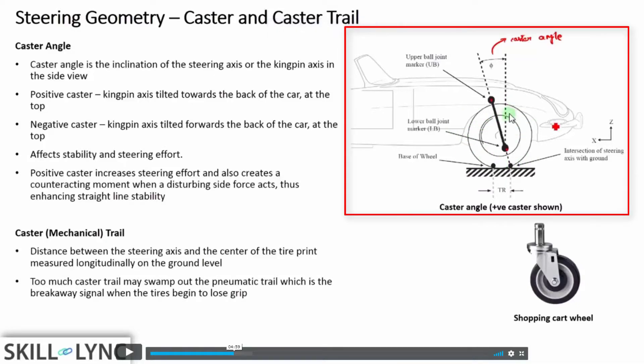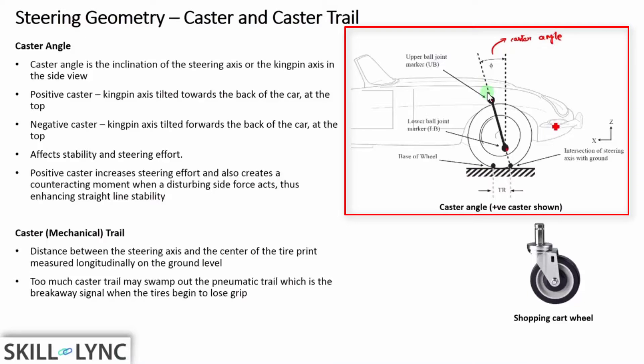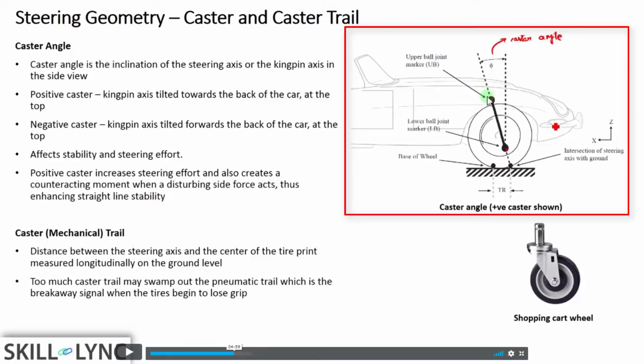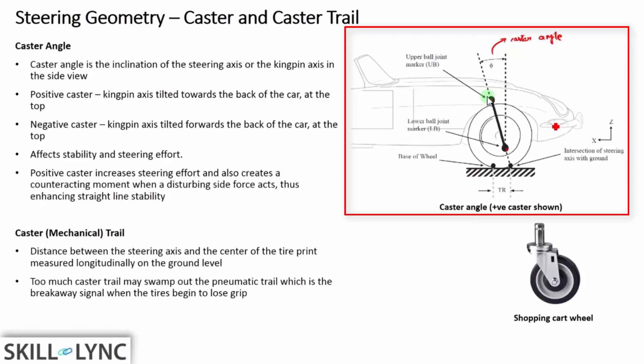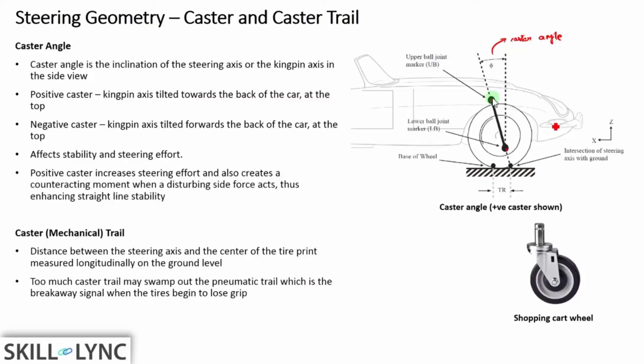Here you have your front wheel, and this axis right here is basically your kingpin axis — the line joining the upper and lower ball joints. In the side view, the kingpin axis is actually inclined to the vertical, because you are looking at the car from the side.